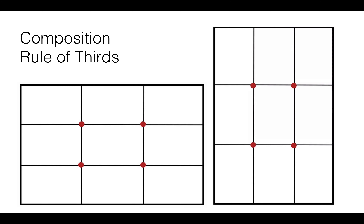As you can see, the red dots at the intersections of these lines, at the third of the way, crossing horizontally and vertically, demonstrate the hot spots for composition in the rule of thirds.